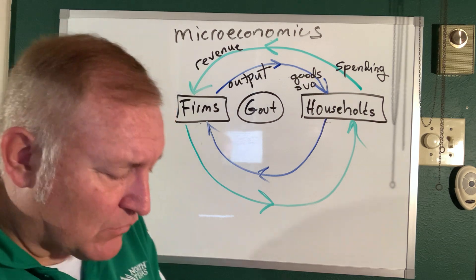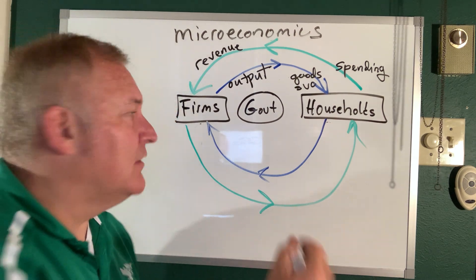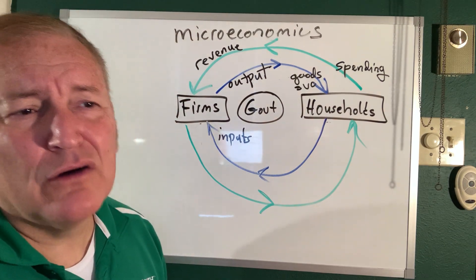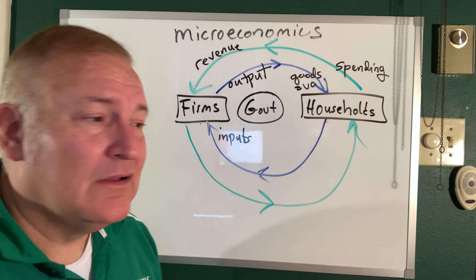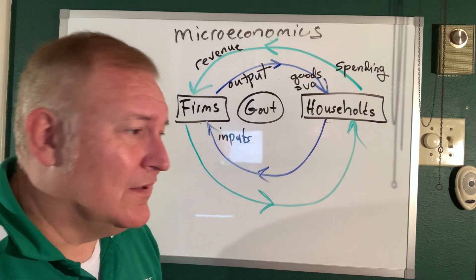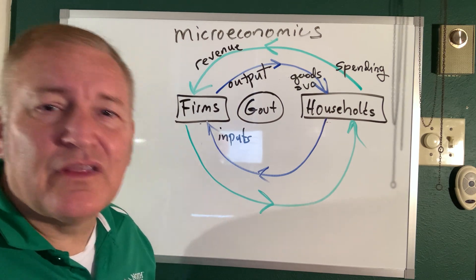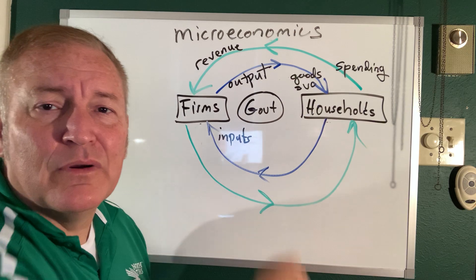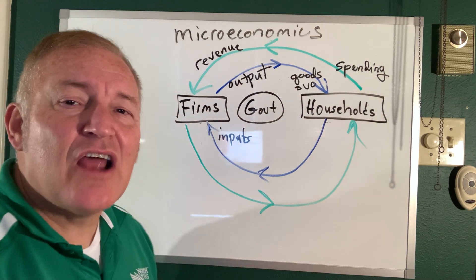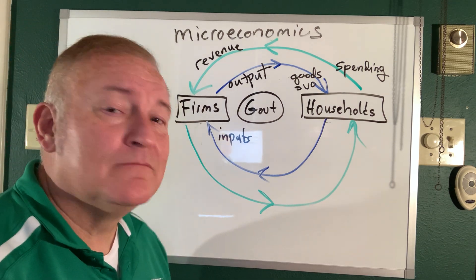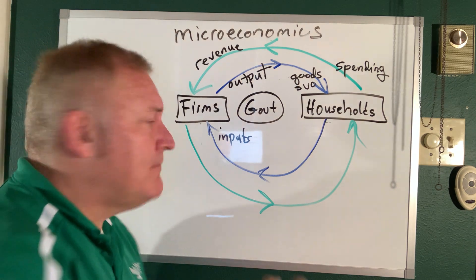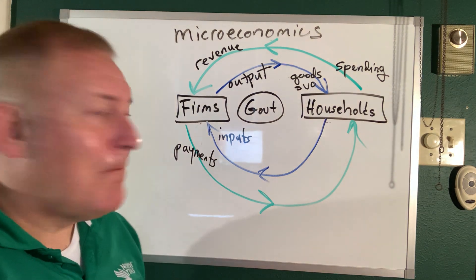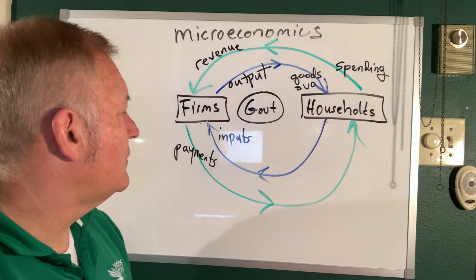If I'm a pizzeria, what's my output? Pizza. Well, what do I need to make that output? I need inputs. What are inputs for making pizza? Dough, sauce, cheese, a pizza oven, a building, employees, labor, a telephone system, computer system, parking lot, utilities — all of those things go into our inputs for the production of our output, pizza. Production is what firms do to inputs to make them outputs. In exchange for those inputs, firms make payments.